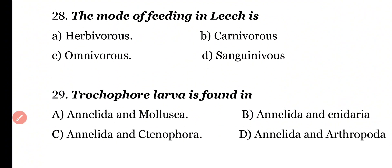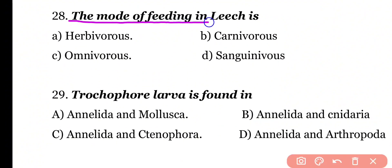Question number 28. The mode of feeding in leech is: herbivorous, carnivorous, omnivorous, or sanguinivorous. Correct answer is option D. Sanguinivorous animals are those which feed on blood — they suck the blood of other animals. So leech is a sanguinivorous animal.